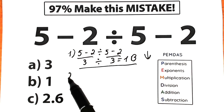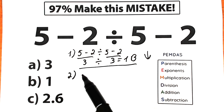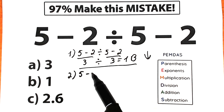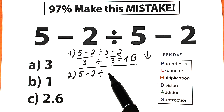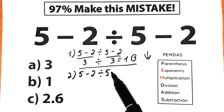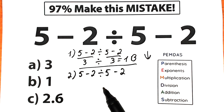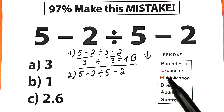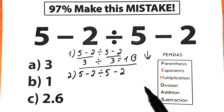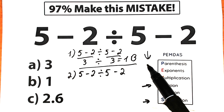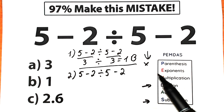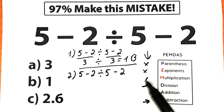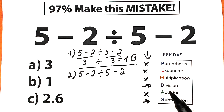So let's solve our challenge according to PEMDAS order of operations. Here is our challenge: 5 minus 2 divided by 5 minus 2. Let's scan what elements we have. We have a subtraction sign and a division sign. Division is here and subtraction is here. We don't have any parentheses, exponents, multiplication, or addition — we only have division and subtraction.